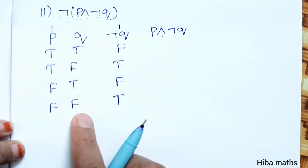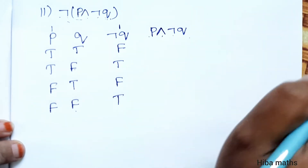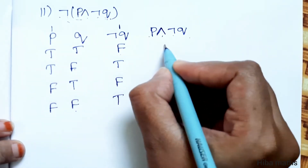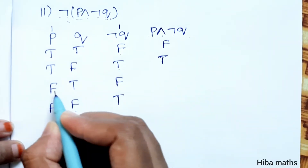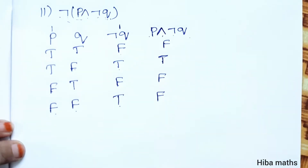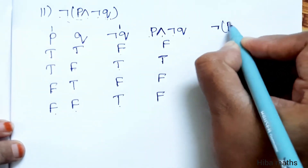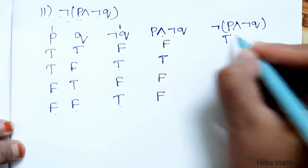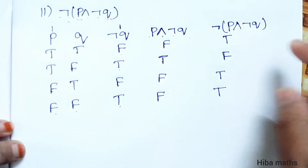We compare the two variables. The AND function of the two variables: true AND false is false, false AND true is false, false AND false is false, false AND true. Then NOT of P AND NOT of Q: false is true, true is false, false is true, false is true. The answer is complete.